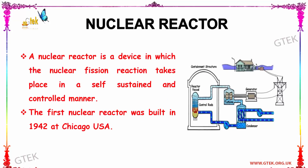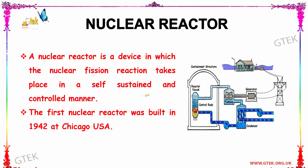Now let us look into the nuclear reactor. The picture on the right side shows a typical nuclear reactor and how it is connected to the power grid and to homes for the provision of electricity. A nuclear reactor is a device in which the nuclear fission reaction takes place in a self-sustained and controlled manner.